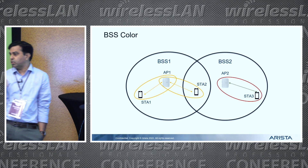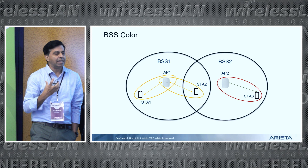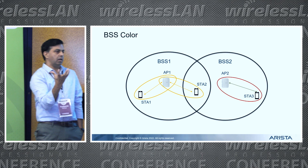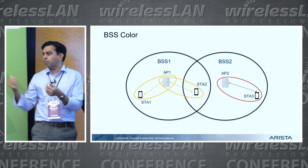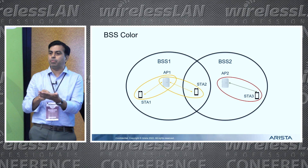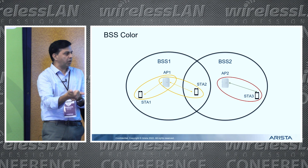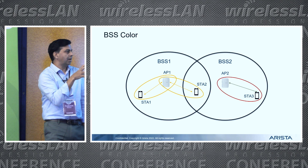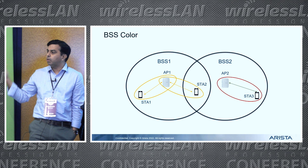This is where BSS color comes in. It's a new feature in 11ax where each BSS is assigned a color — there are 63 colors available. Two BSS operating on the same channel can use different colors, allowing you to differentiate whether a transmission is coming from your BSS or somebody else's. The nice thing is that this color is put in the preamble, so as soon as you start decoding the packet, you can see what color it belongs to and figure out whether this is an intra-BSS or inter-BSS transmission.